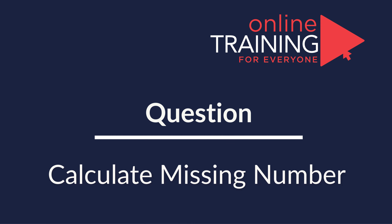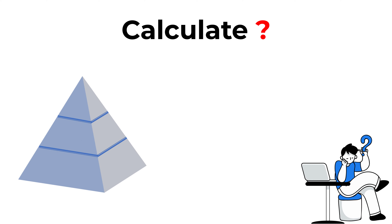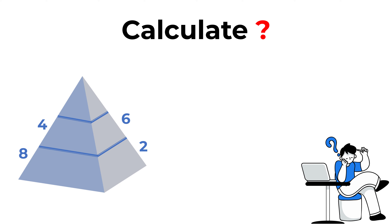Here's a cool question you frequently see on the test. You need to calculate the question mark. You're presented with a three-layer pyramid. On the bottom layer you have numbers 8 and 2, on the middle layer you have numbers 4 and 6, and in the top layer you have number 3 and on the other side a question mark. The question mark can be one of four values: choice A is 6, choice B is 10, choice C is 7, and choice D is 2.